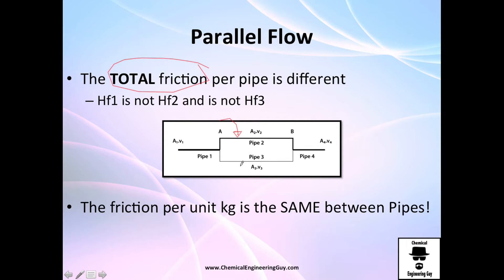The total friction in the pipe is very different. If you have a lot of friction right here and low friction right here, you're going to have a lot of flow right here and very little flow right here.